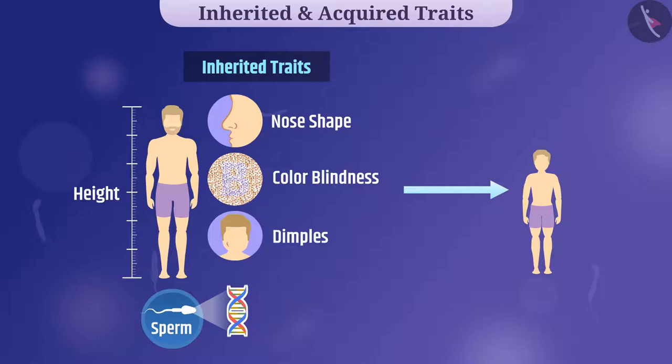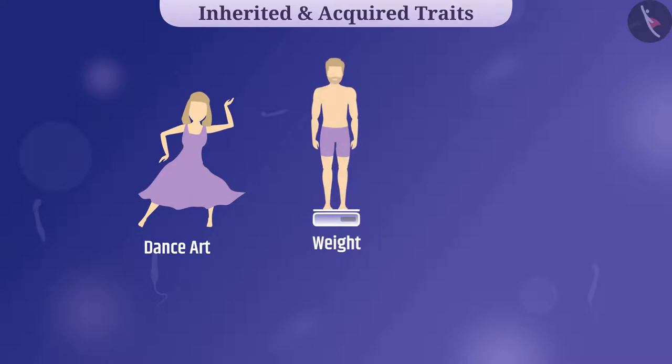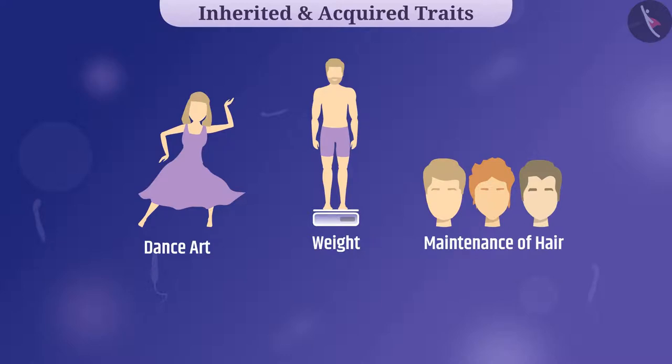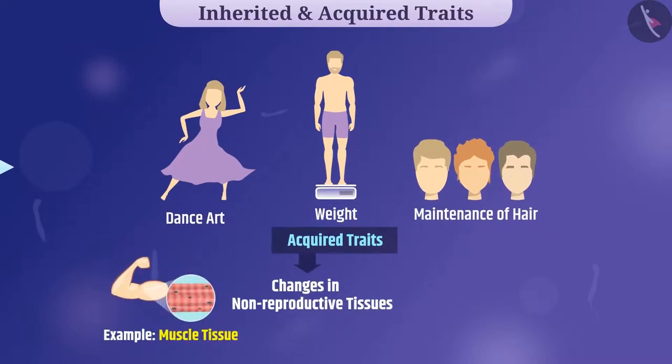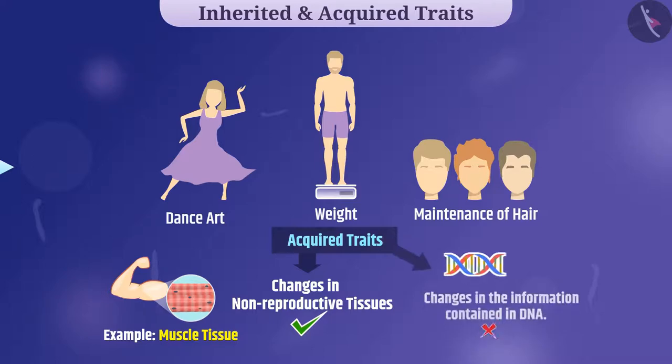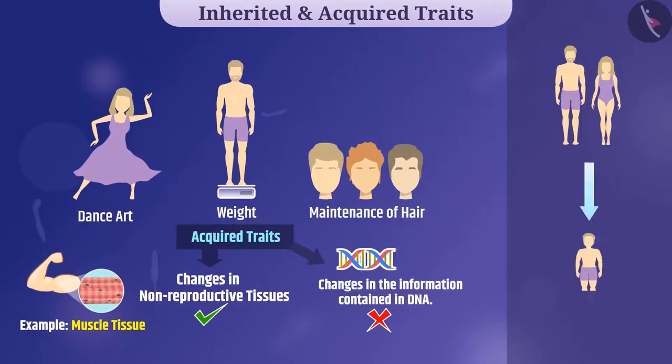Those traits like dance art, weight, maintenance of hair which the organism acquires during their lifetime are called acquired traits. Acquired traits lead to changes in non-reproductive tissues but it does not cause change in DNA of the gametes. Hence, during generation, there is no inheritance of acquired traits from one generation to next.